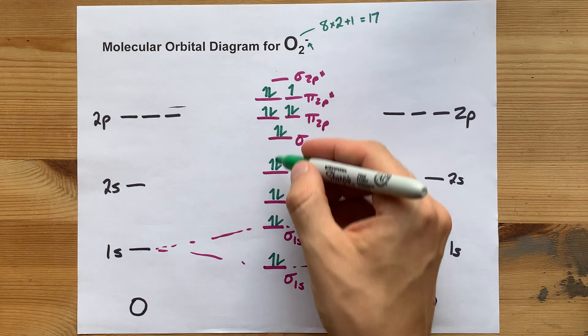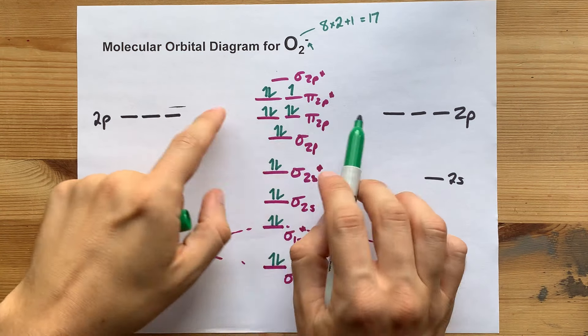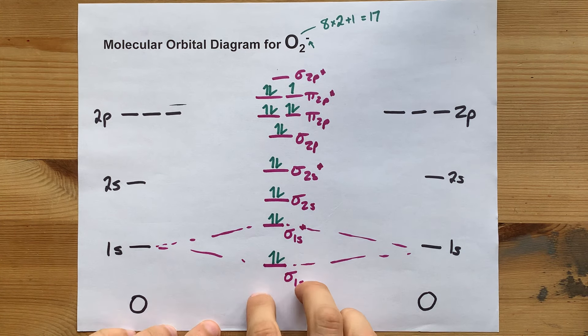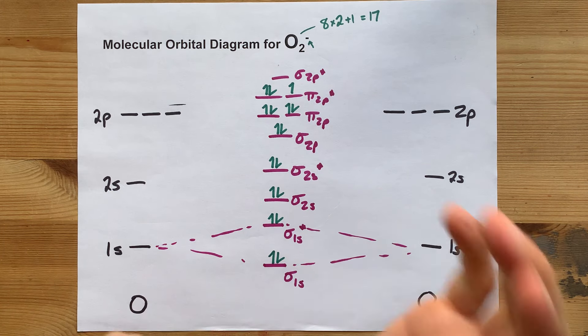So here's my finished molecular orbital diagram. Again, your teacher probably wants dotted lines to show how these are splitting. But this right here shows where the electrons are in the molecular overlaps.